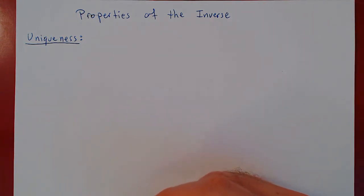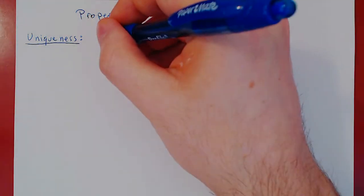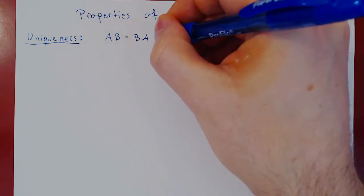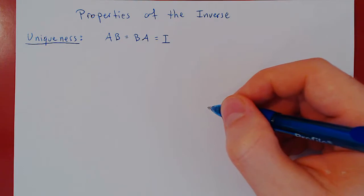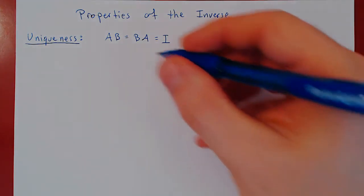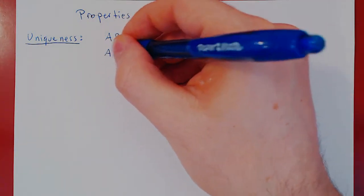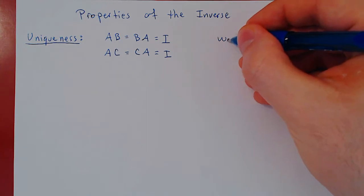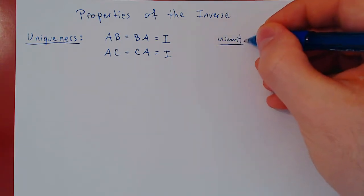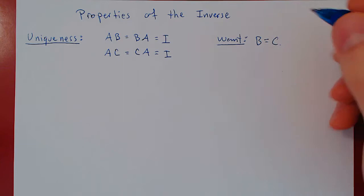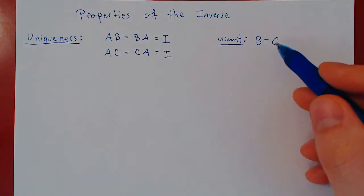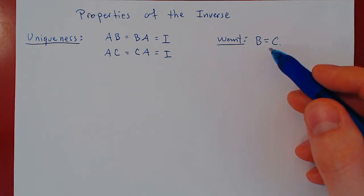Suppose we have a square matrix A and that we have two inverses. Suppose that B is an inverse of A, so A times B equals B times A equals I. And suppose that we have a second inverse of A, call it C, so A times C equals C times A equals I. What we want to show is simply that B equals C — if any two inverses of A are always equal, there is really only one inverse.